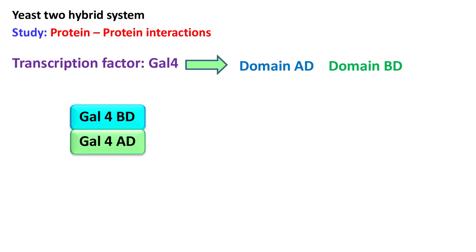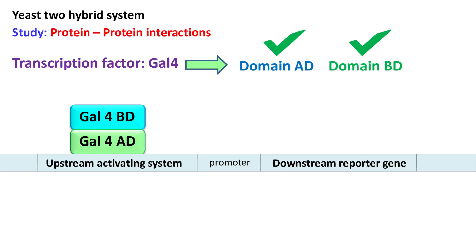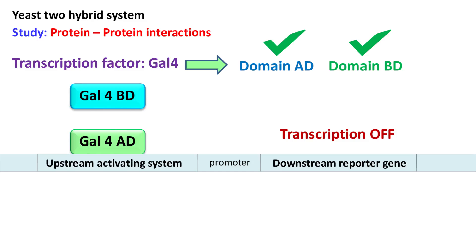Both domains are required for the function of the transcription factor. When Gal4 has both domains, the transcription of the downstream gene is switched on. If somehow domain AD and domain BD are separated, then there is no transcription of the downstream gene.